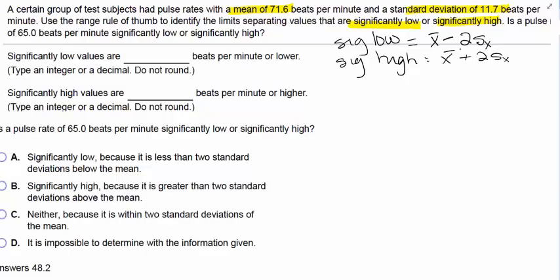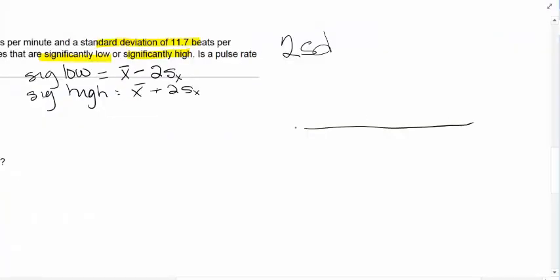We're going to compare them by looking at values significantly far from the mean. So here is a normal curve. Here's the mean. We have one standard deviation away. So this is one standard deviation. This is two standard deviations.